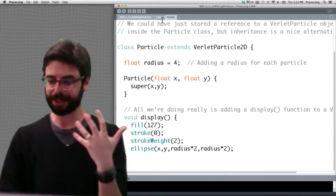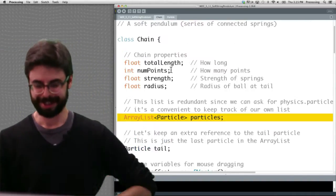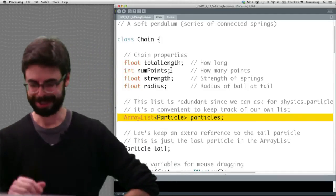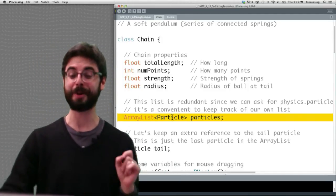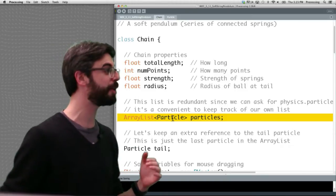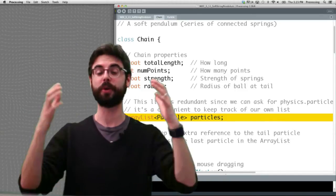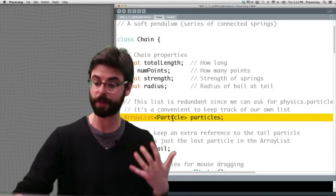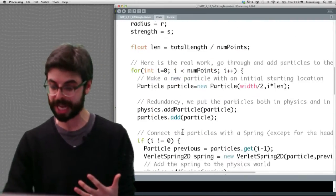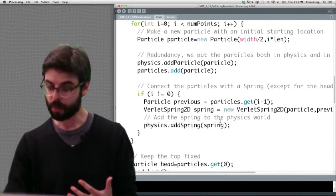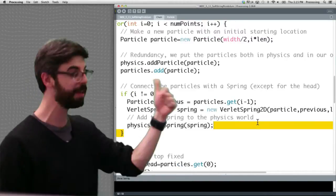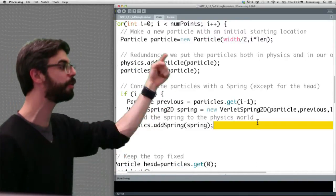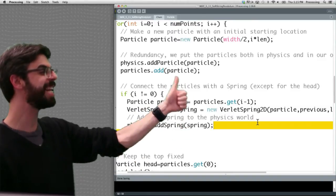The chain class is an ArrayList of particles. We have to figure out spacing—total length, rest line, making a spring for each one. We're making a spring between each particle and the previous particle.